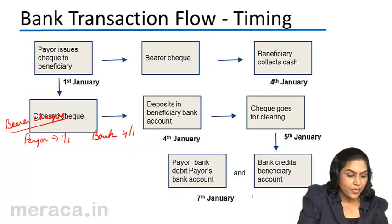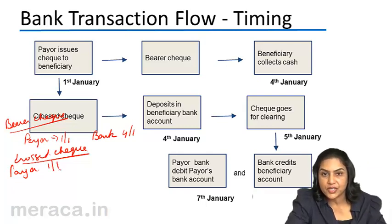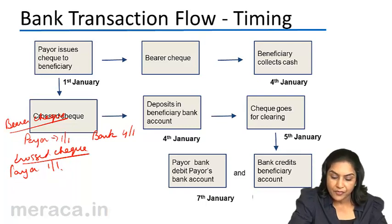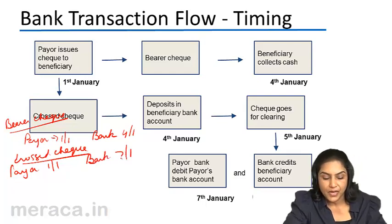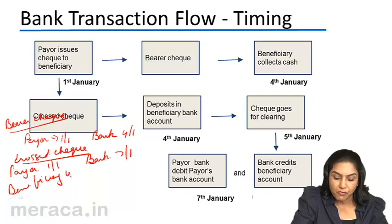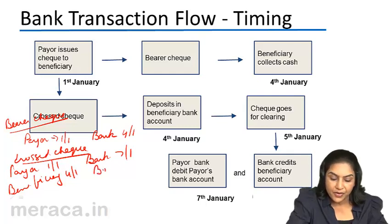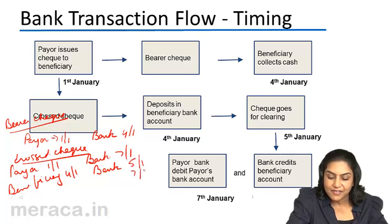In this case, we note that in the case of a cross check, the payer issues the check on 1st and therefore records this transaction in his books on the 1st. However, the bank debits his account only on 7th January. As far as the beneficiary is concerned, the beneficiary deposits the check on 4th January and therefore records the same in his books on 4th January. The bank, however, would be crediting his account either on 5th January or on 7th January.